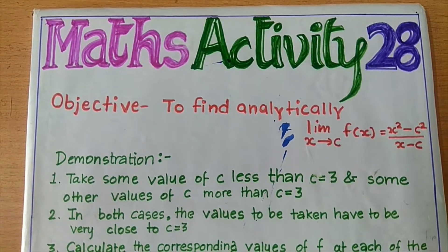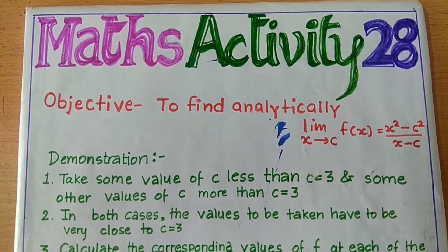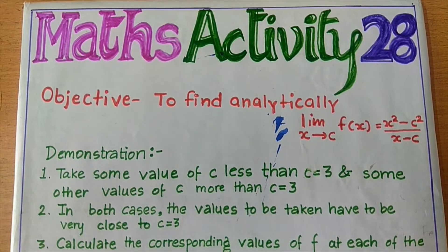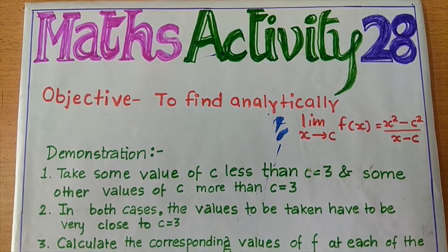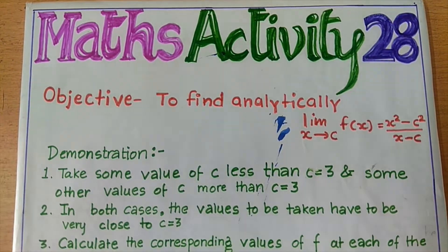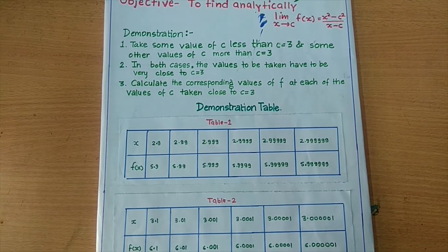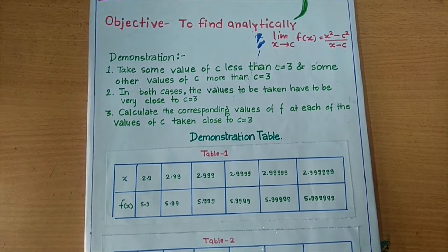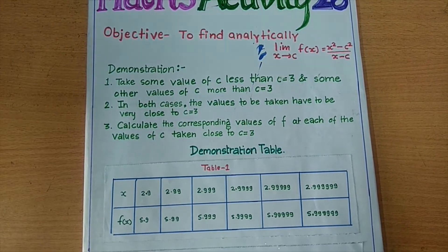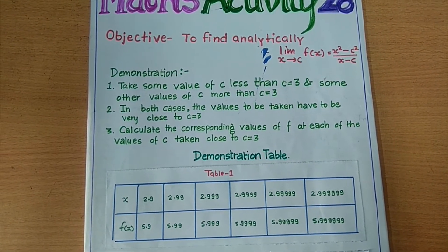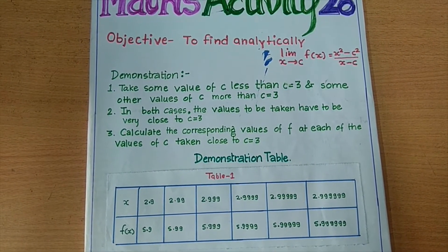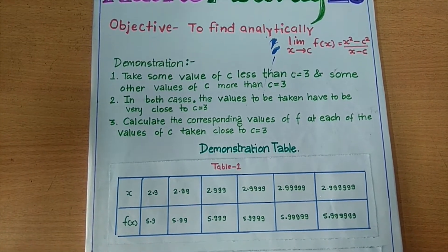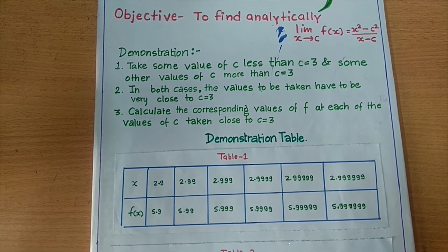The objective of this activity is to find analytically the limit as x tends to c of f(x), which equals x squared minus c squared upon x minus c. Here we consider the function f(x) as x tends to c equal to x squared minus 9 upon x minus 3. In this case, we put c equal to 3 in our objective function.